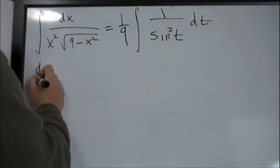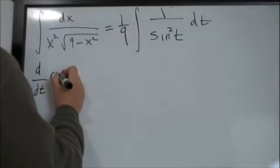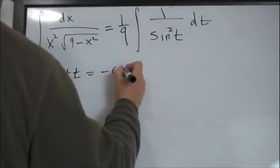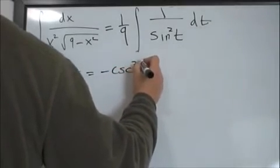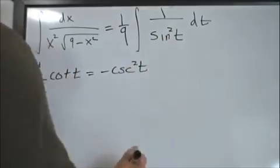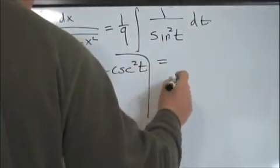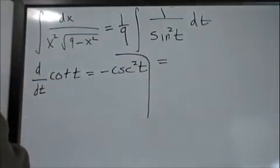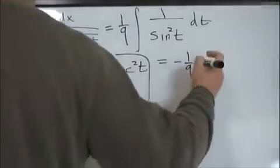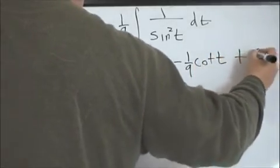This integral is elementary. From first-semester calculus, d/dt[cot(t)] = -csc²(t), and 1/sin²t = csc²t. So the integral evaluates to -(1/9)·cot(t) + C.